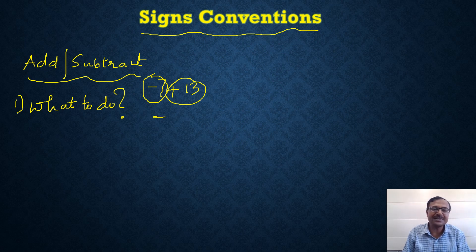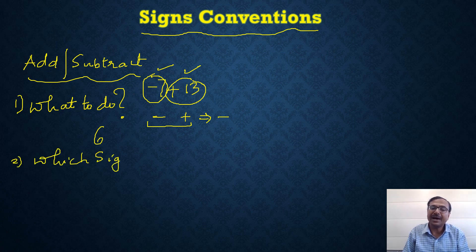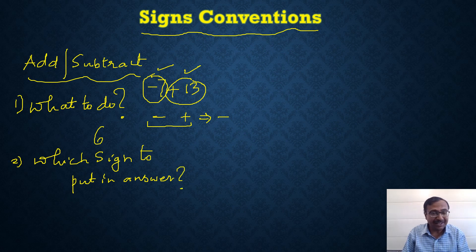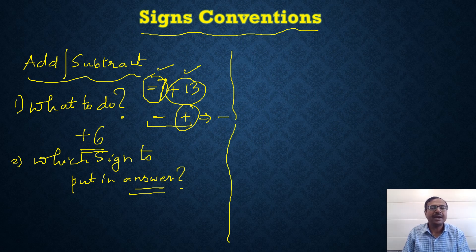Because one integer is negative and the other is positive, a negative and a positive makes a negative, so you subtract the integers. 13 minus 7 gives a difference of 6. The second thing is which sign to put in the answer — the answer always attains the sign of the larger integer. Since 13 is positive and is the larger integer, the answer is plus 6.